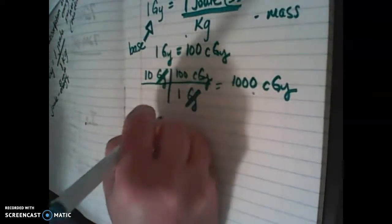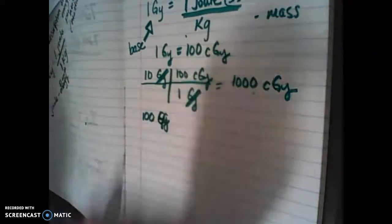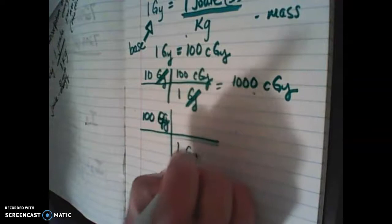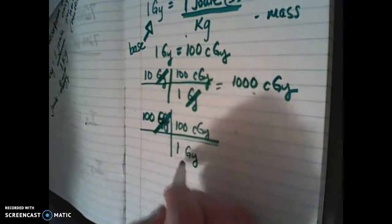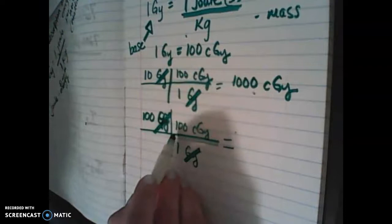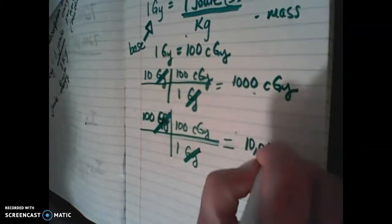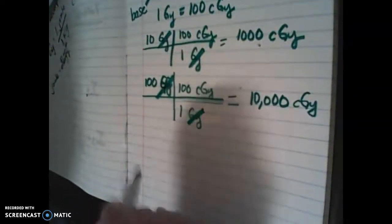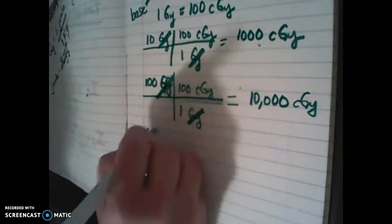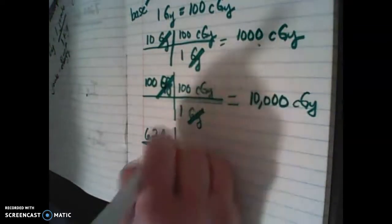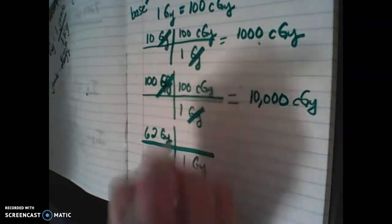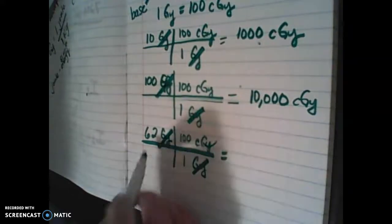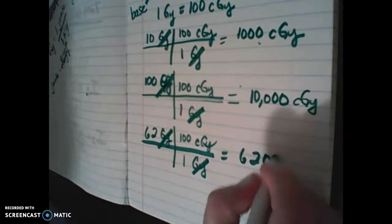So let's say we have 100 gray and we want to know how many centigray. We have 1 gray and 100 centigray as the conversion factor, so grays are going to cancel out and we're left with 100 times 100, which is going to be 10,000 centigray. Let's try it with something that's not divisible by 10. Let's look at 62 gray — we want to know how many centigray is 62 gray. Our conversion factor is 1 gray equals 100 centigray, and we're looking for centigray, so we mark out gray. 62 times 100 is going to be 6,200 centigray.